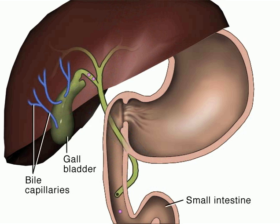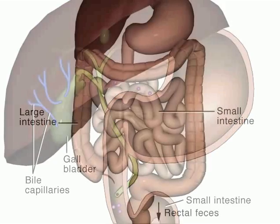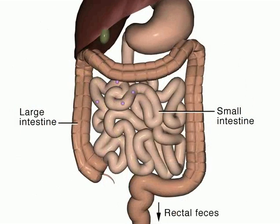Others may be secreted back into the small intestine in the bile, in what is known as enterohepatic cycling. Other parts of the oral dosage may be absorbed in the large intestine or fecally excreted.